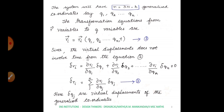We form the transformation equation from r-variables to q-variables using: ri-vector = ri-vector(q1, q2, ..., qn, t) — call this equation 2. Since virtual displacement does not involve time, from equation 2 we get delta-ri = (∂ri/∂q1)delta-q1 + (∂ri/∂q2)delta-q2 + ... + (∂ri/∂qn)delta-qn. The term ∂ri/∂t is zero, so we omit it.